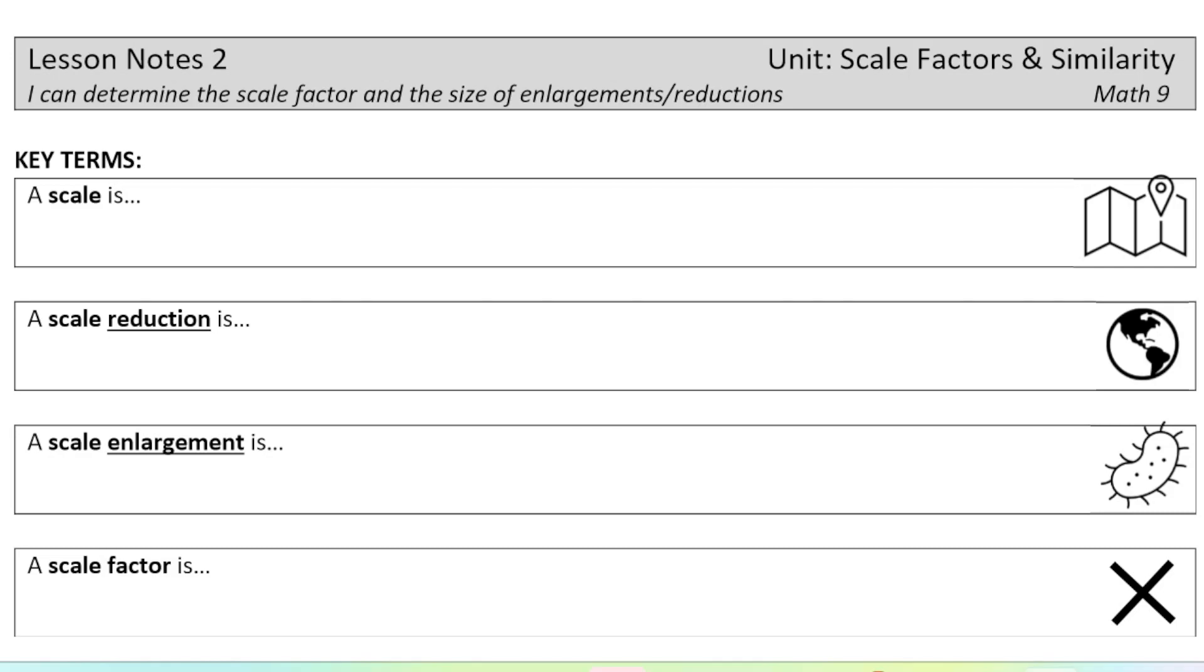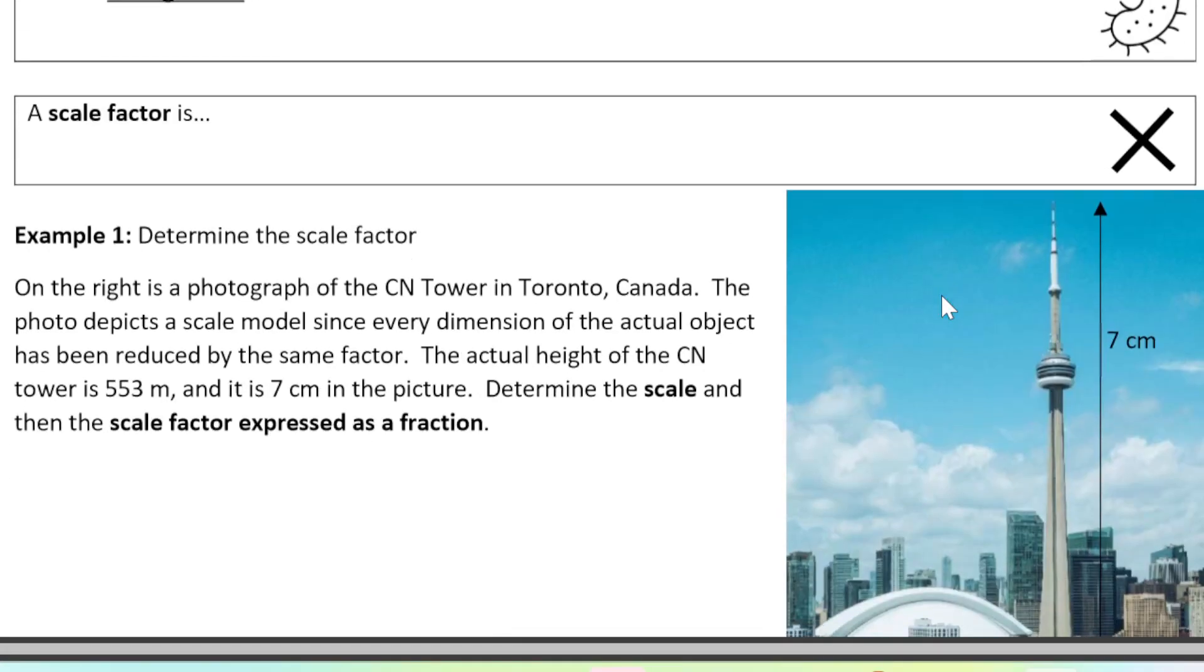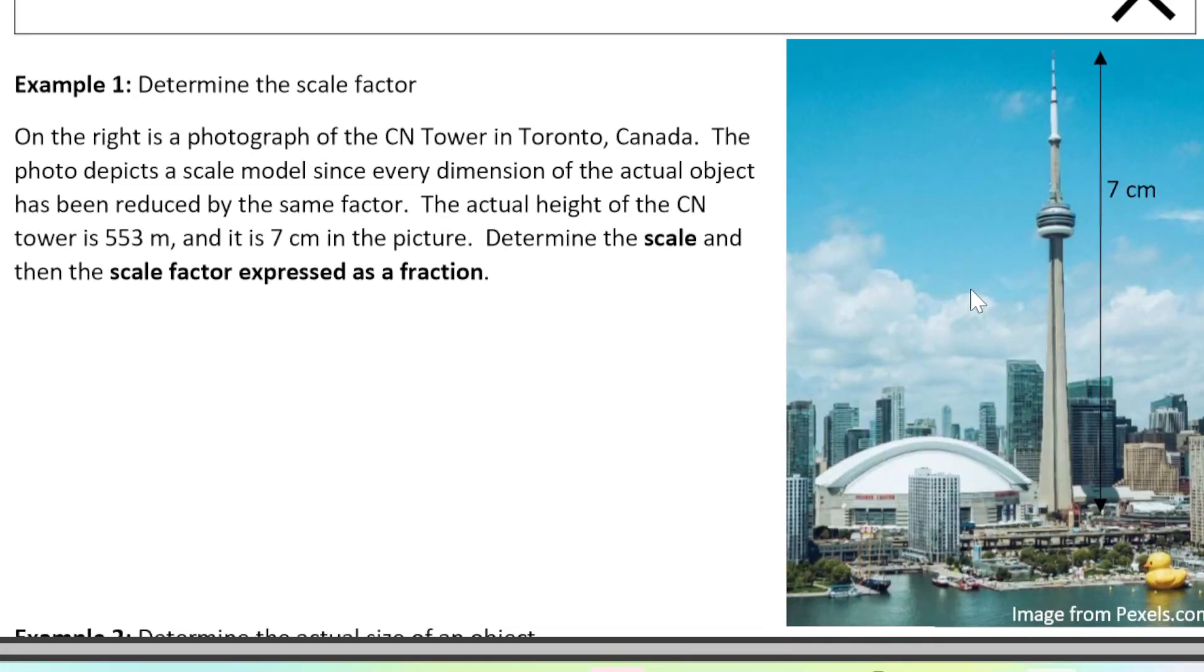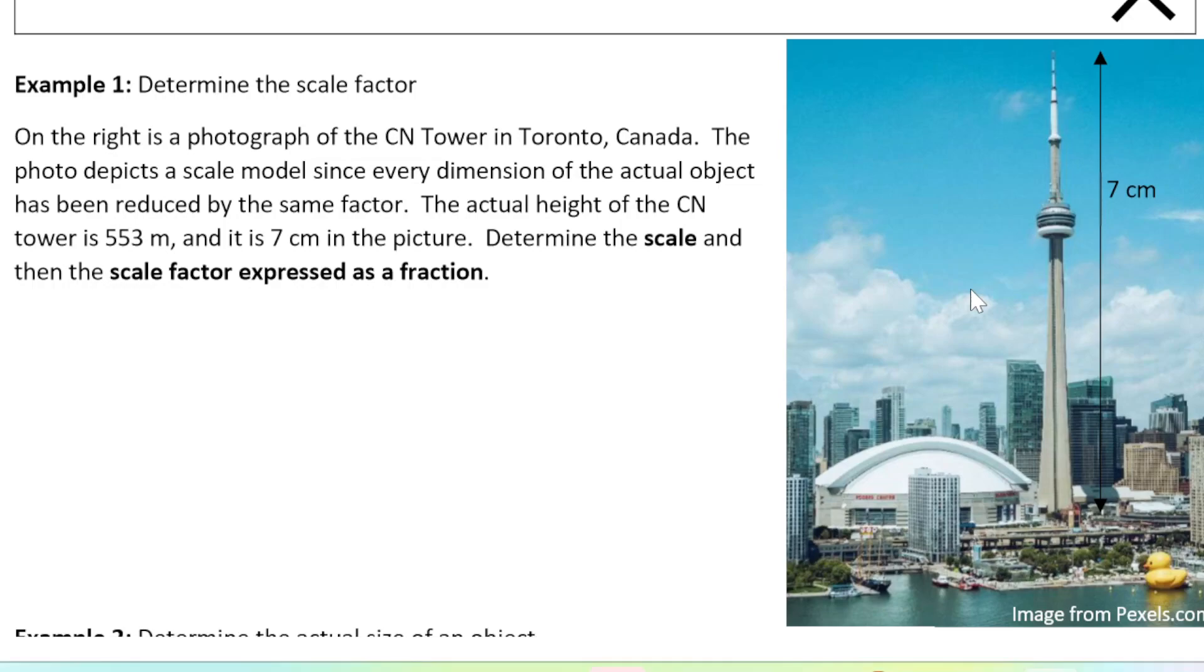There are lots of places in real life when it doesn't really make sense to draw something at its actual size. Either it's way too big of an item to draw or it's way too small. So we either make a reduction or an enlargement and draw a scale diagram. A quick example here is this picture, right? This is not the actual size of the CN Tower. This is a scale picture, a scale photograph of the CN Tower.